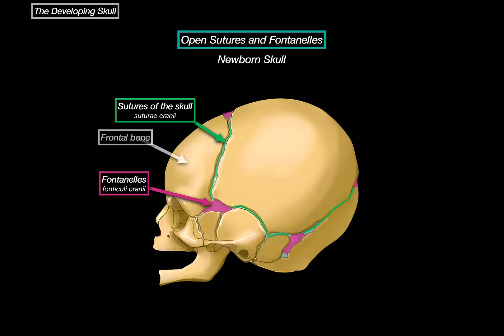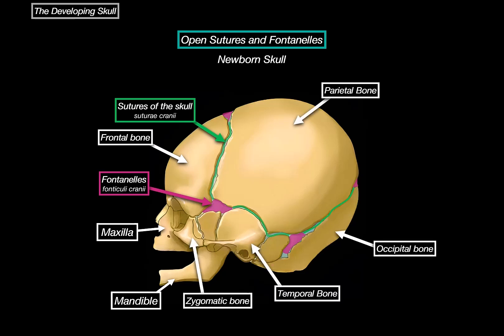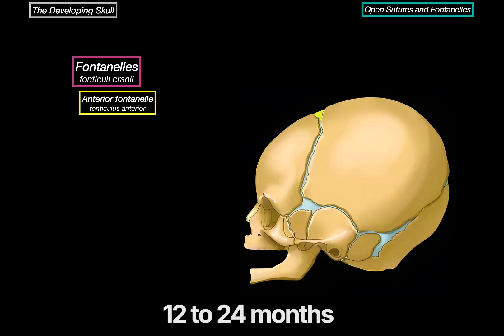For orientation, we can see the frontal bone, maxilla, mandible, zygomatic bone, temporal, occipital, and parietal bone. There are four main fontanelles. The anterior fontanelle is the one most people think of first — it's the diamond-shaped, largest fontanelle that usually closes somewhere between 12 to 24 months of age.